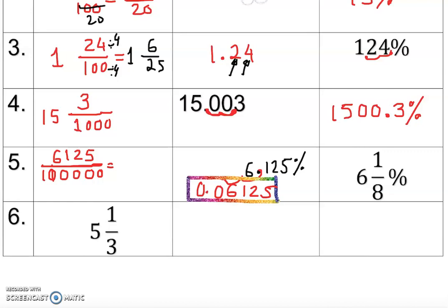Now can we reduce 6125 over 100000? Check if you can reduce it. After applying divisibility and dividing, we get 49 over 800.